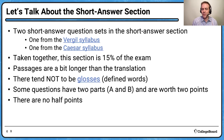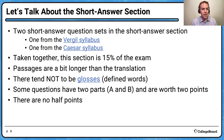There tend not to be glosses — defined words — for this section. You'll have to rely on your knowledge of the Latin and what you can figure out from context. Some questions have two parts, A and B, and those are worth two points, so you must answer both. If you only answer one part, you can only get one of those points. There are no half points either — so if a question asks for case and number and you only give the case, you get zero points.